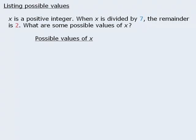Well, we're looking for numbers such that when we divide them by 7, the remainder is 2. So one possible value is 9. 9 divided by 7 equals 1 with remainder 2. Perfect.